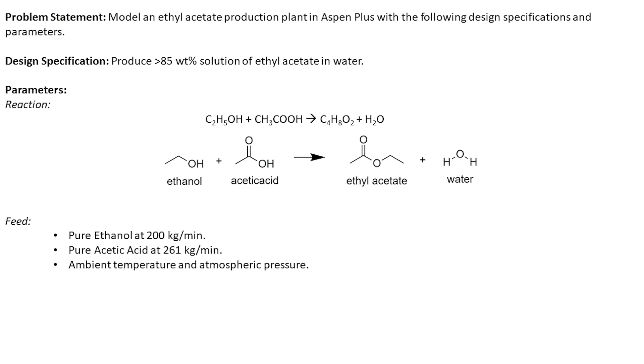The goal is to model a plant that produces 85 weight percent solution of ethyl acetate in water. The plant is specified to contain two feed streams: a 200 kg per minute stream of ethanol and a 261 kg per minute stream of acetic acid.